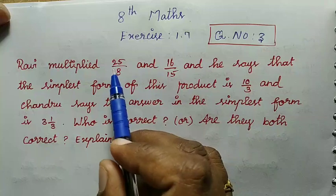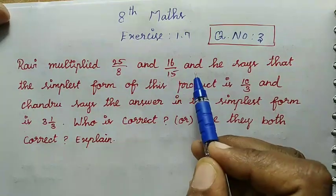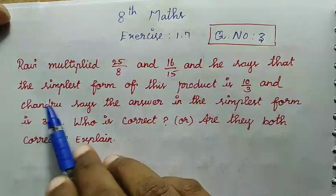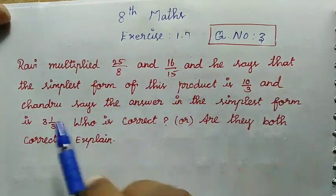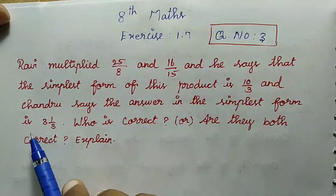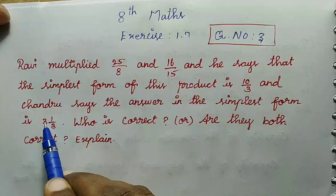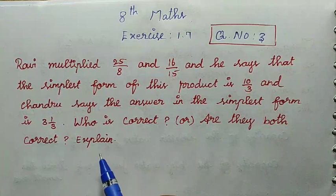Ravi multiplied 25 by 8 and 16 by 15 and he says that the simplest form of this product is 10 by 3. And Chandru says the answer in the simplest form is 3 and 1 by 3. Who is correct, or are they both correct? Explain.